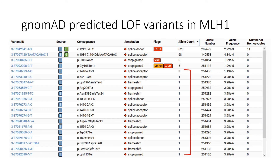As a result, when you look at the variants in gnomAD for genes related to adult onset conditions, you will often find individuals with pathogenic variants in those genes.